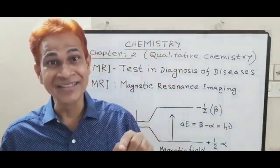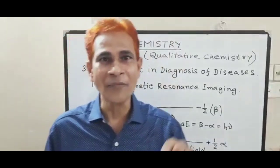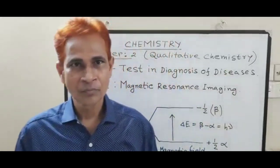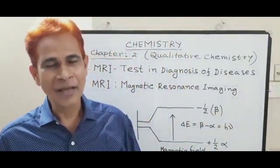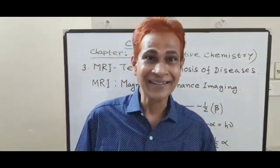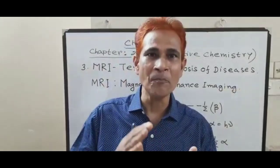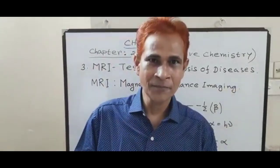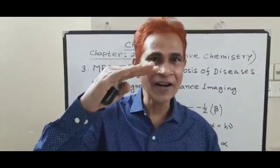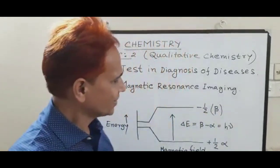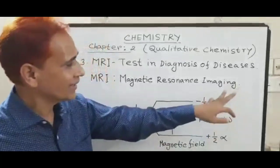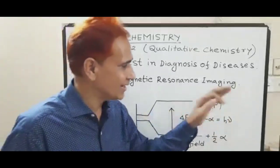MRI is based on the magnetic resonance of hydrogen atoms which are present in water of the human body. When the patient enters the MRI machine, under the influence of the magnetic field, the hydrogen atoms of the human body align to different energy levels — one is the lower energy level or alpha energy level, and the other is the higher energy level or beta energy level.